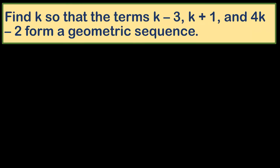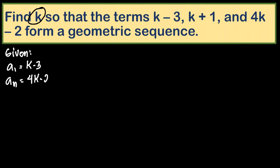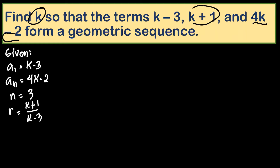Let's have the last example: find k so that the terms (k-3), (k+1), and (4k-2) form a geometric sequence. We are to solve for the value of k. We are given a₁ = k-3, the last term aₙ = 4k-2, n = 3 terms, and the common ratio r = (k+1)/(k-3), or equivalently (4k-2)/(k+1) — both yield the same result.